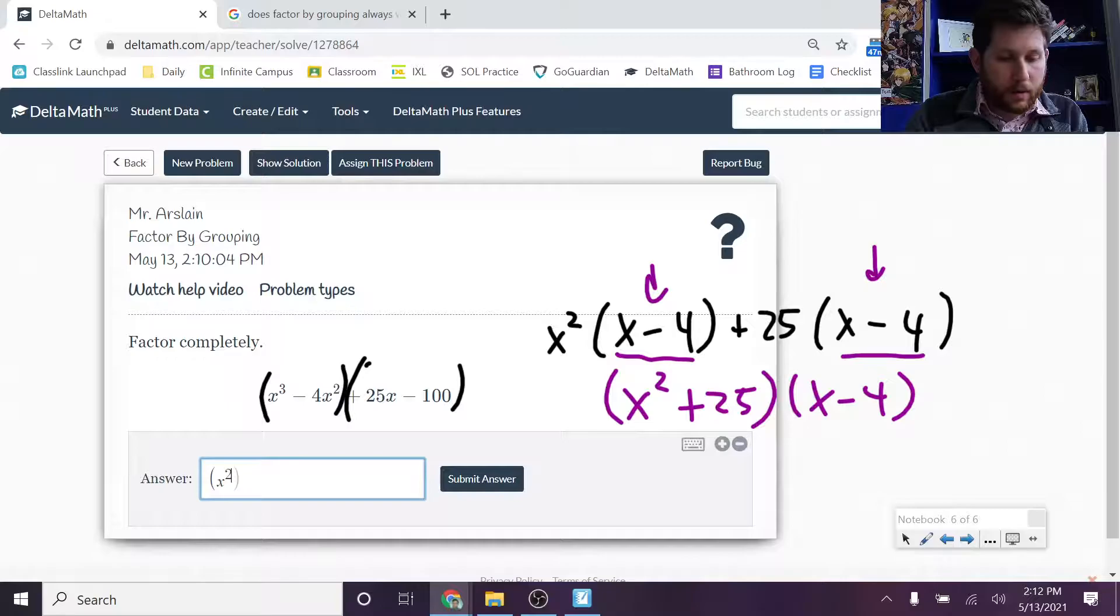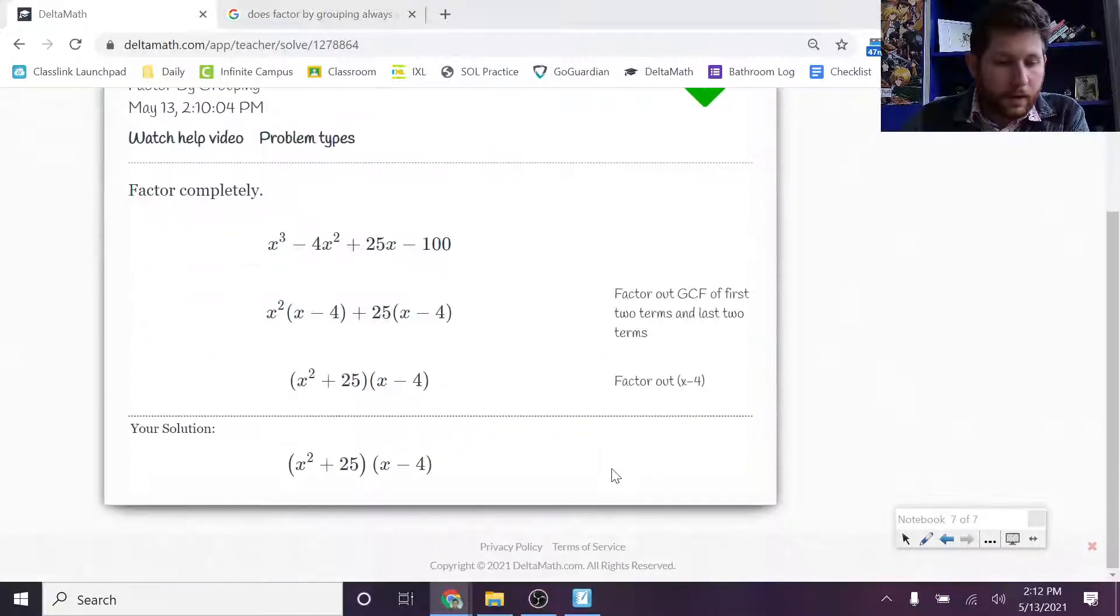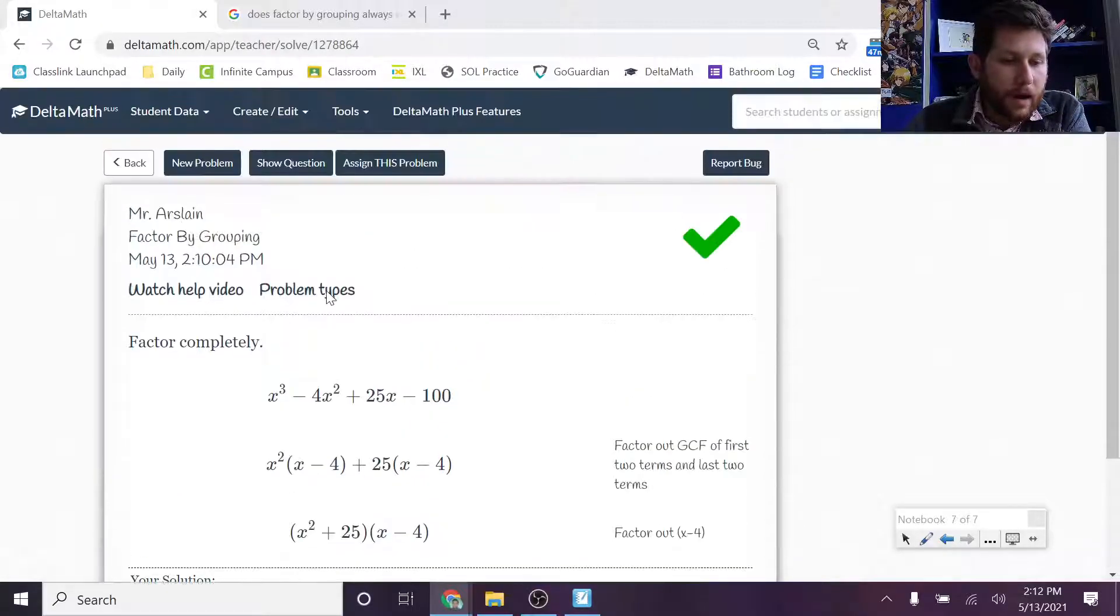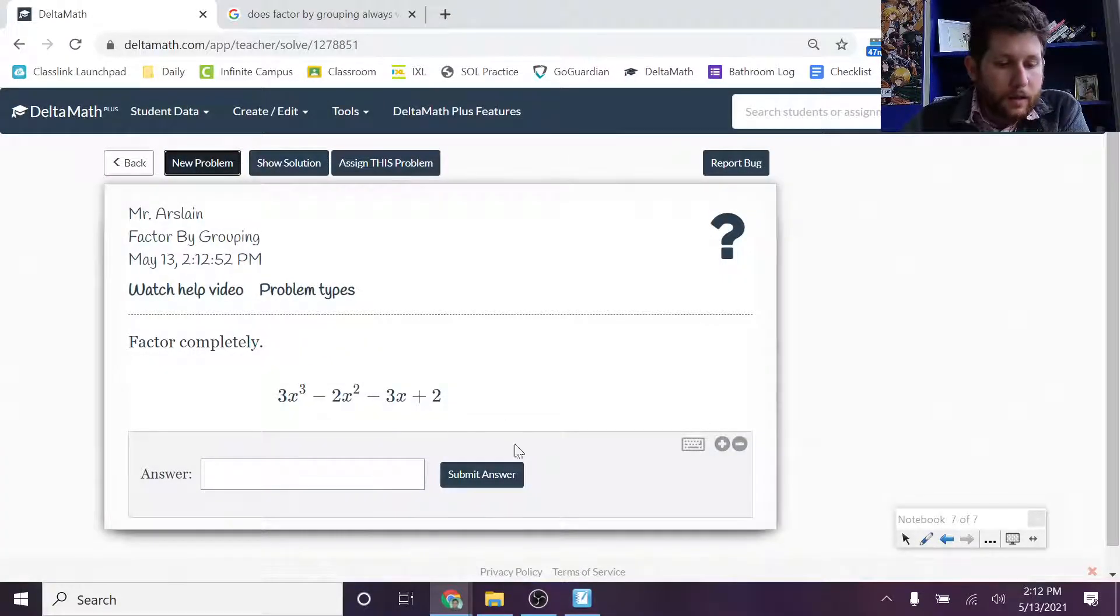And then that should get me to my solution. So let's go ahead and type this in. x squared plus 25, and then x minus 4. Let's go ahead and try that. And there we go. And they show you exactly how to do that. You factor out the GCF out of both of them, and then factor out the x minus 4. So it's a clever little way for you to take these problems and factor them.